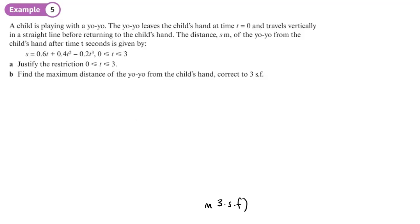A child is playing with a yo-yo. The yo-yo leaves the child's hand at T equals 0 seconds and travels vertically in a straight line before returning to the child's hand. The distance S of the yo-yo from the child's hand after time T seconds is given by this expression.